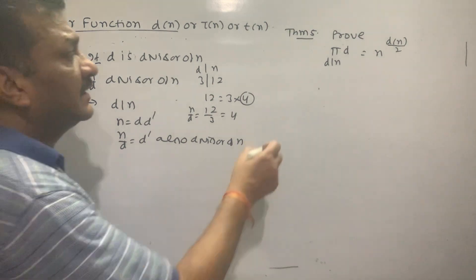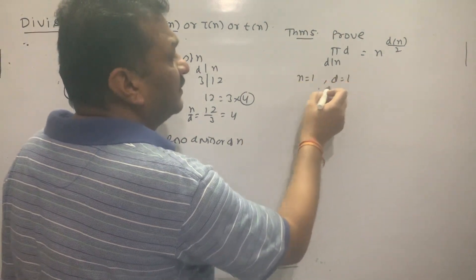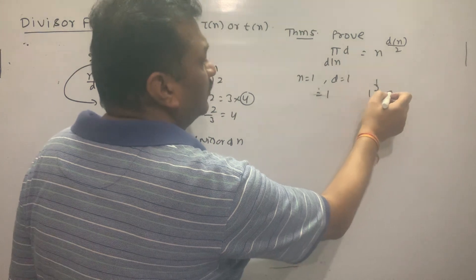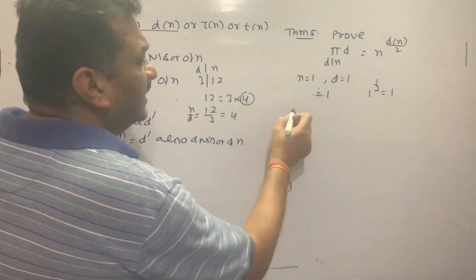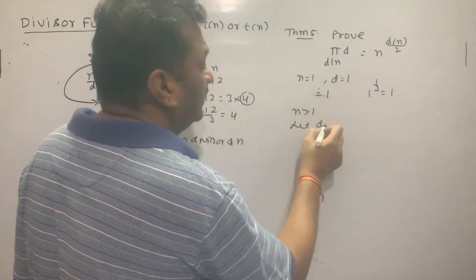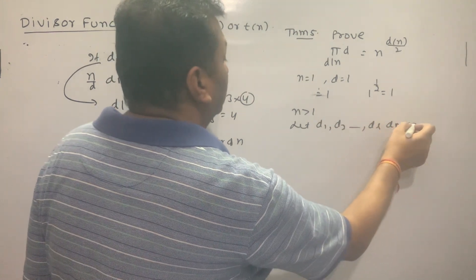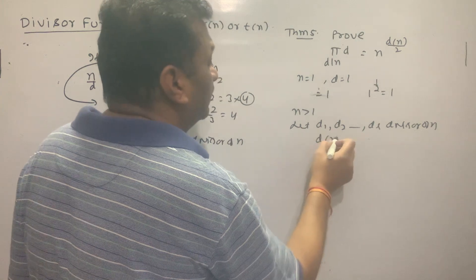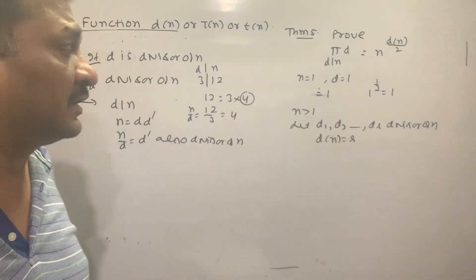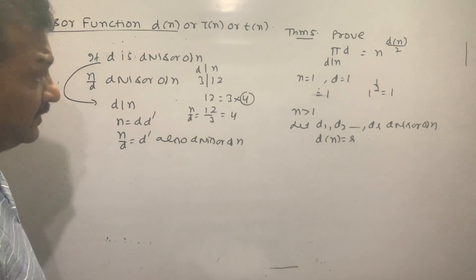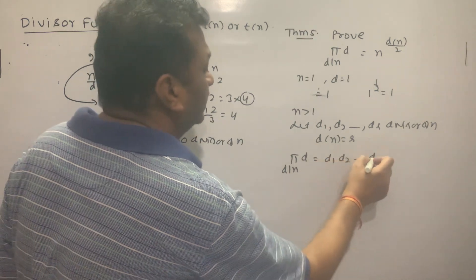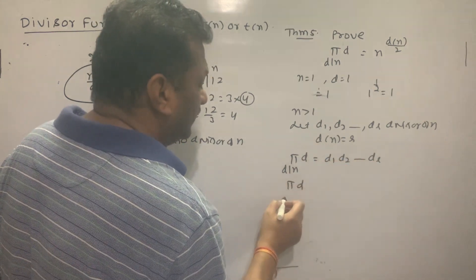Let me prove this. First, if n equals 1, then d equals 1. The left hand side equals 1 and the right hand side equals 1. Now if n is greater than 1, let d₁, d₂, ..., dᵣ be the divisors of n. What is d(n)? The number of divisors is r. Then the product of divisors ∏(d|n) d can be paired with n/d₁, n/d₂, ..., n/dᵣ, which are also divisors of n.